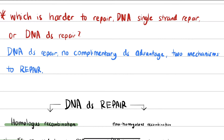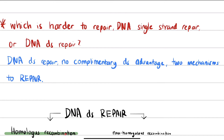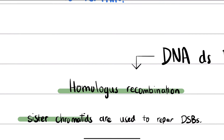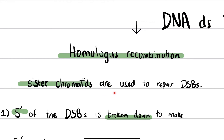Things get more complicated with a double strand break. There are two possible routes. The first is homologous recombination, which is only possible when a sister chromatid is nearby. The cell will search for a sister chromatid to use as a template, integrate it with the broken strand, and repair it. The second is non-homologous end joining, used when no sister chromatid is found.